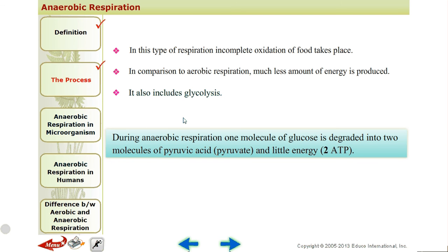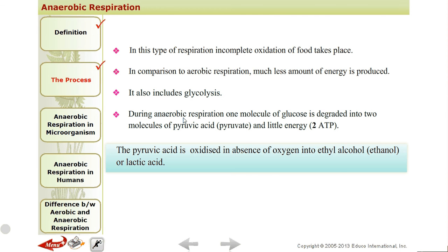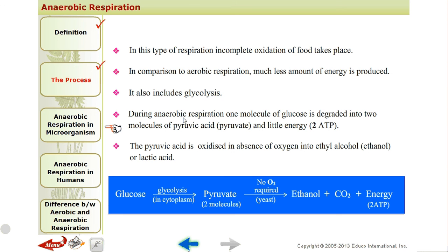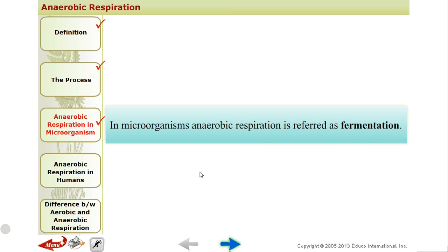During anaerobic respiration, one molecule of glucose degrades into 2 pyruvate molecules and only 2 ATP molecules. Pyruvate is then oxidized in the absence of oxygen. In yeast — which is used in bakeries — pyruvate forms alcohol or ethanol, making bread fluffy. If there is lack of oxygen rather than complete absence, lactic acid is formed. Glycolysis produces pyruvate, which in the absence of oxygen converts to ethanol, CO2, and energy, generating only 2 ATP.